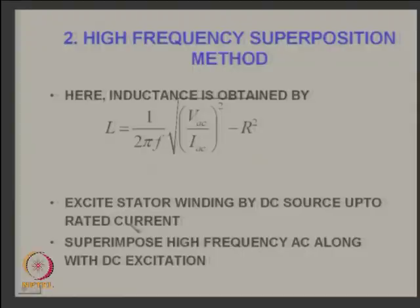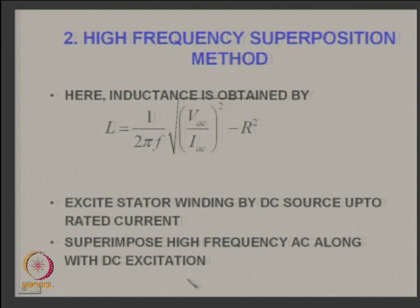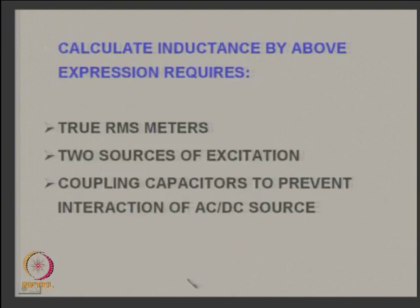The high frequency superposition method obtains L using XL = √(Z² − R²). You excite the stator winding with a DC source up to rated current, then superpose a high frequency AC signal along with the DC excitation. This requires true RMS meters, both DC and AC excitation sources, and coupling capacitors to prevent interaction between the AC and DC sources.